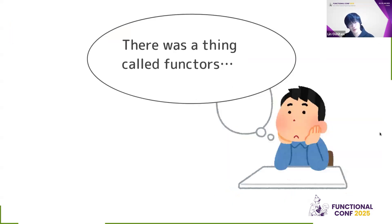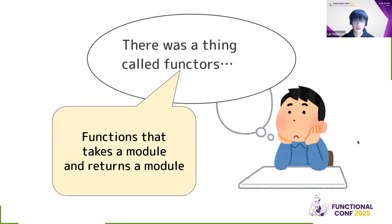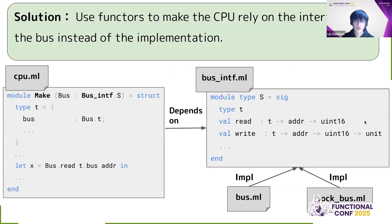At this point, I remembered, hey, there was a functionality called functors in OCaml. Maybe I can use this here. And what functors means in OCaml is that it's functions that take a module and returns a module. How can this be used? The solution was to use functors to make the CPU rely on the interface of the bus instead of the implementation.